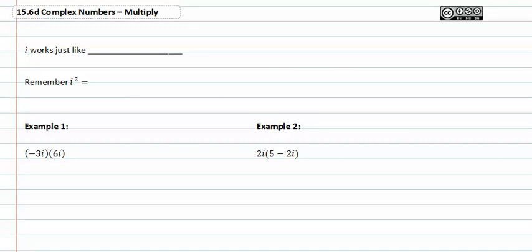Once again, it's important to remember that i works just like variables. This means you treat it just as if it were an x or a y. And the other thing to remember is that i squared is the same as the square root of negative one times the square root of negative one, which is equal to negative one.